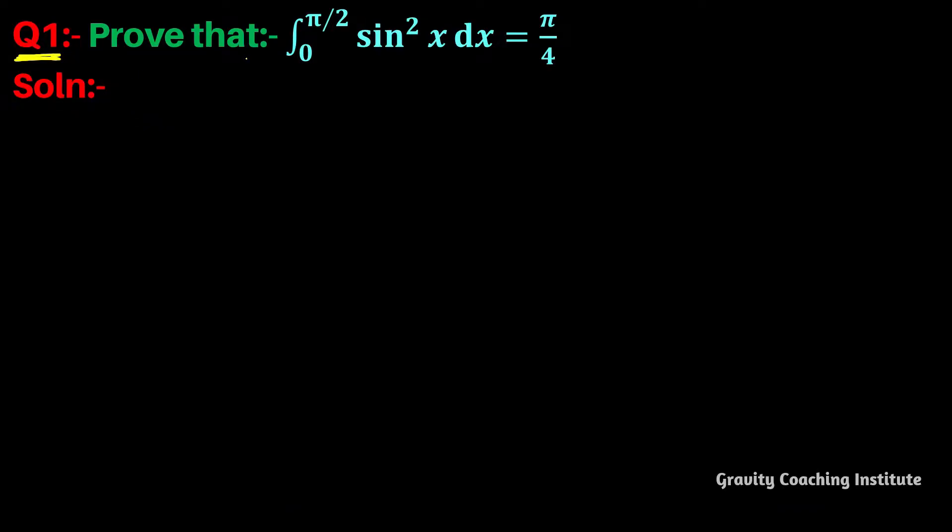Question number 1. Prove that integral 0 to pi by 2 sin square x dx equals pi by 4. So, first of all, let I equal to integral 0 to pi by 2 sin square x dx.